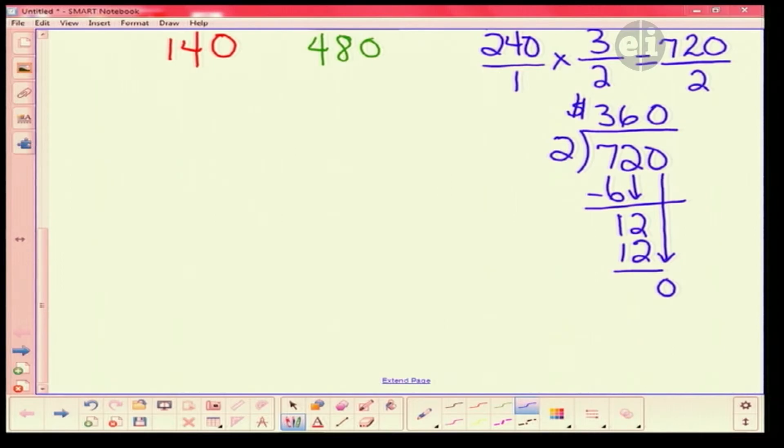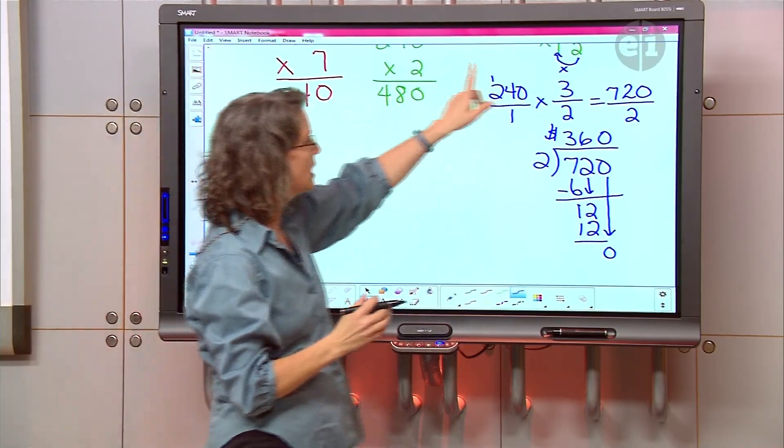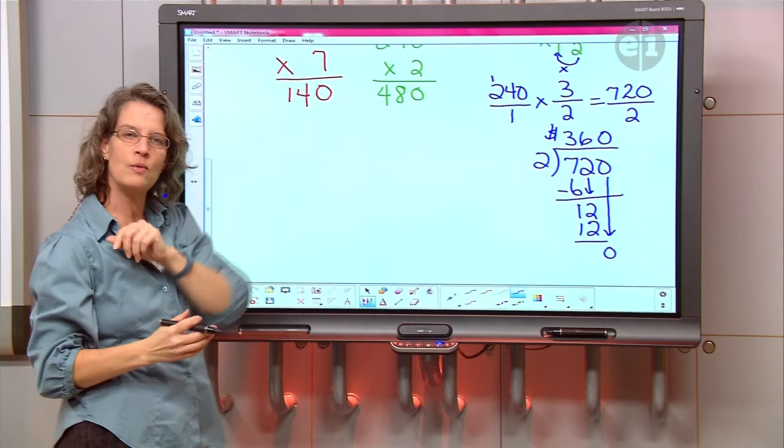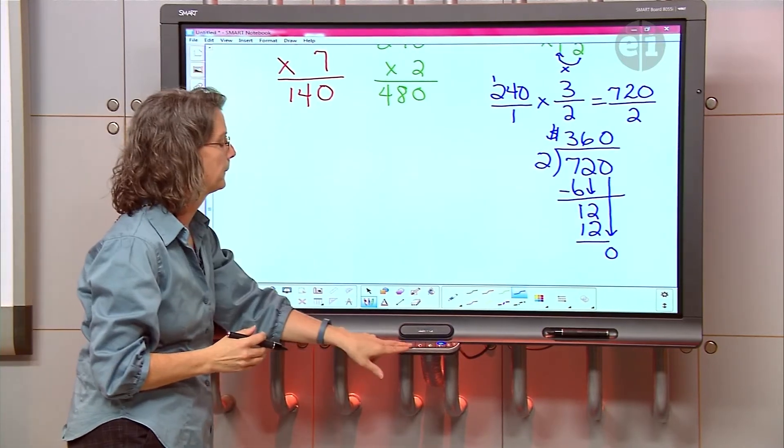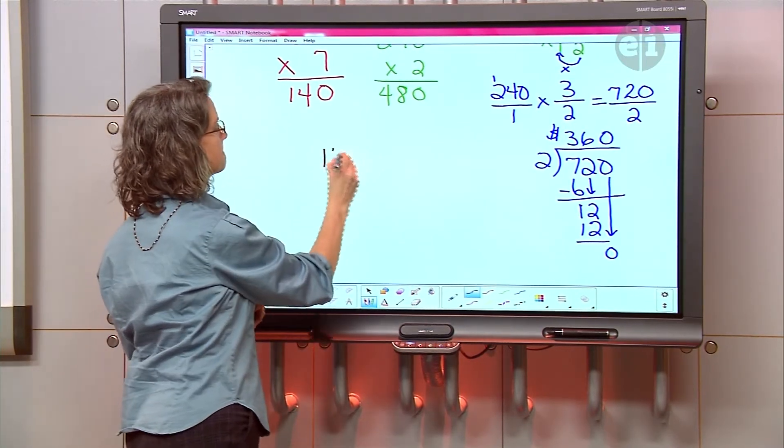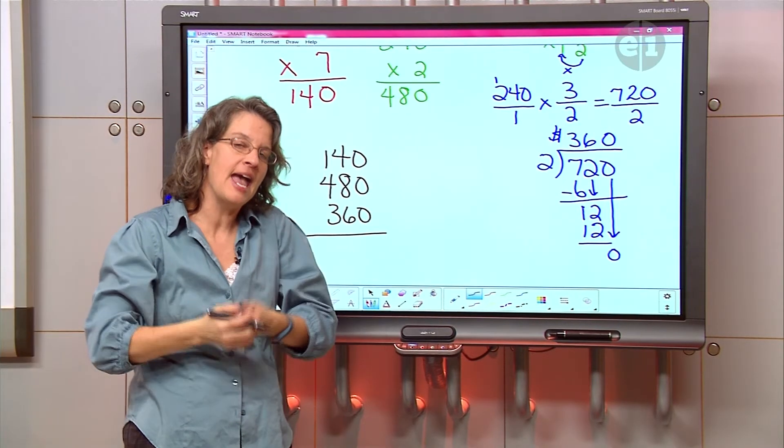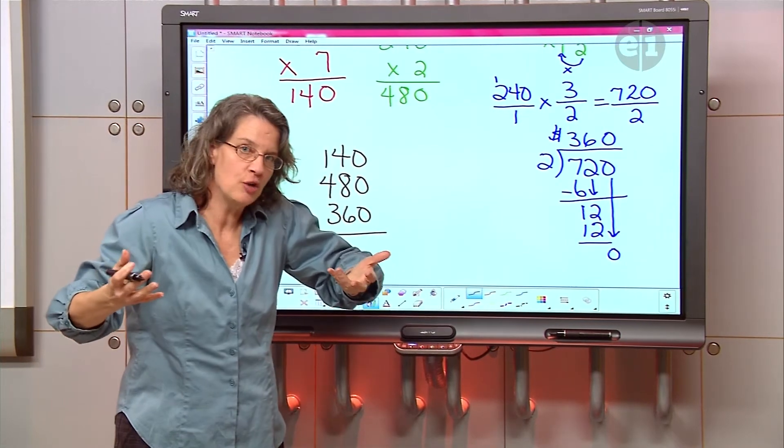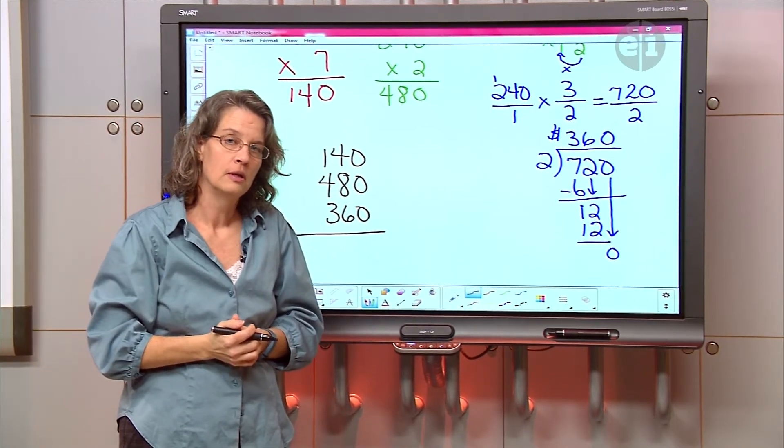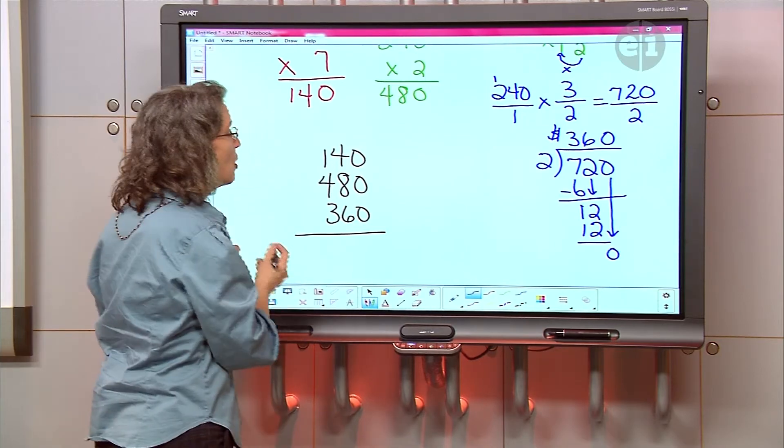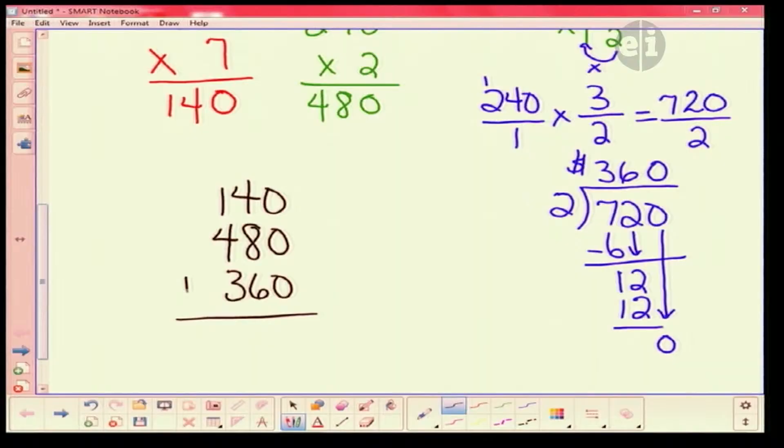What do you think we need to find the total with the 140, the 480, and the 360? What do you think we have to do? We're finding total. If I asked you to go to your piggy bank and tell me how many pennies you had, what would you do? Count. You would count them. So counting is the same as adding. So let's add them up.